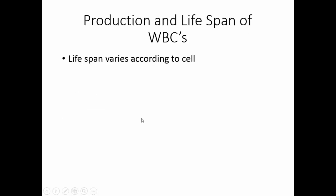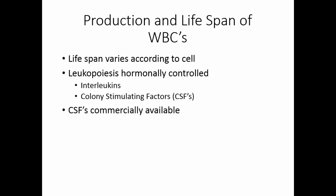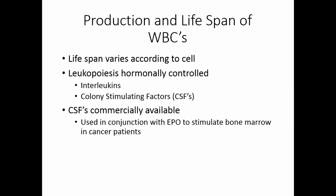White blood cells have a lifespan that varies by cell type — some last a few days, some may last your entire life. Leukopoiesis, or the formation of white blood cells, is hormonally controlled. Interleukins are released by the immune system to stimulate white blood cell production during infection. Colony stimulating factors stimulate different colonies — granulocytes or agranulocytes. Colony stimulating factors are commercially available and, since chemotherapy depresses bone marrow, people on chemotherapy often need both erythropoietin and colony stimulating factors to maintain their cell counts.